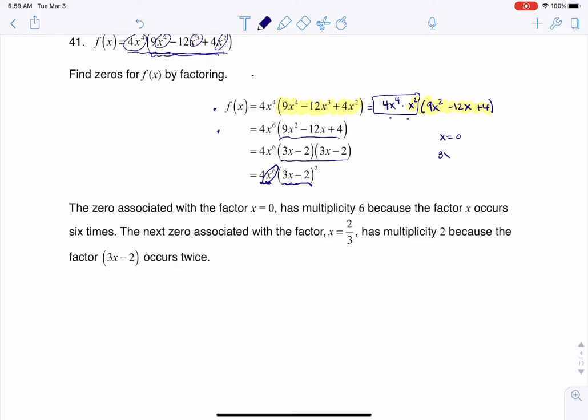So if you want to find zeros, you set each of those factors to zero. This one is automatically solved for. This one when I solve for it, I'm going to get x is equal to two thirds. So here are my two zeros for this function. Or if we were graphing this, these would be the x coordinates of my x intercepts.